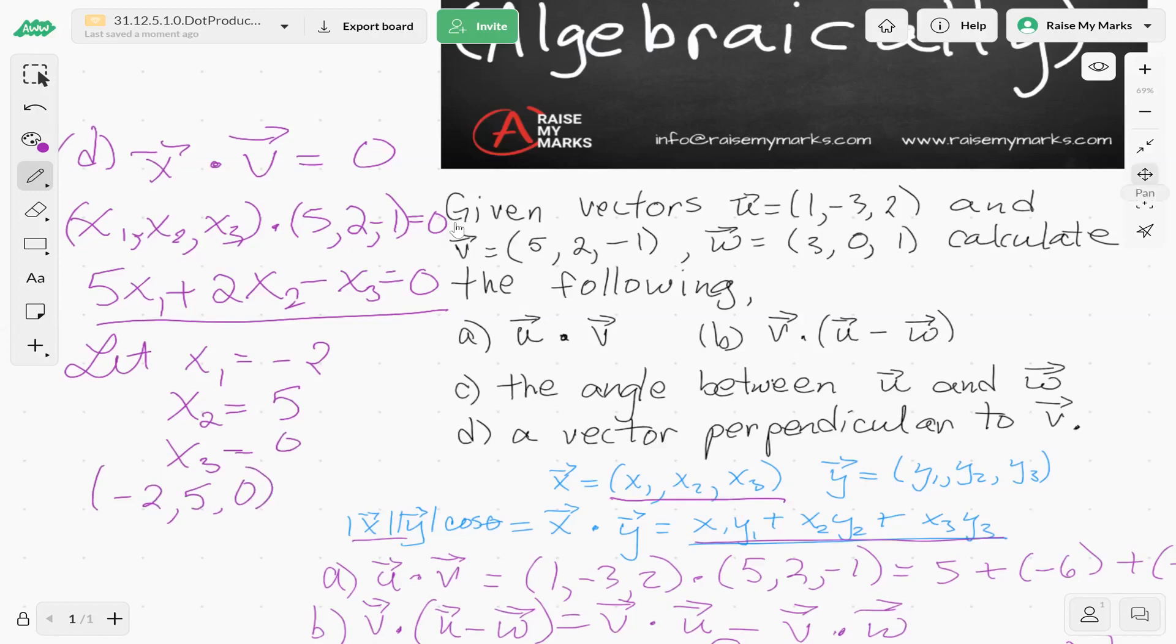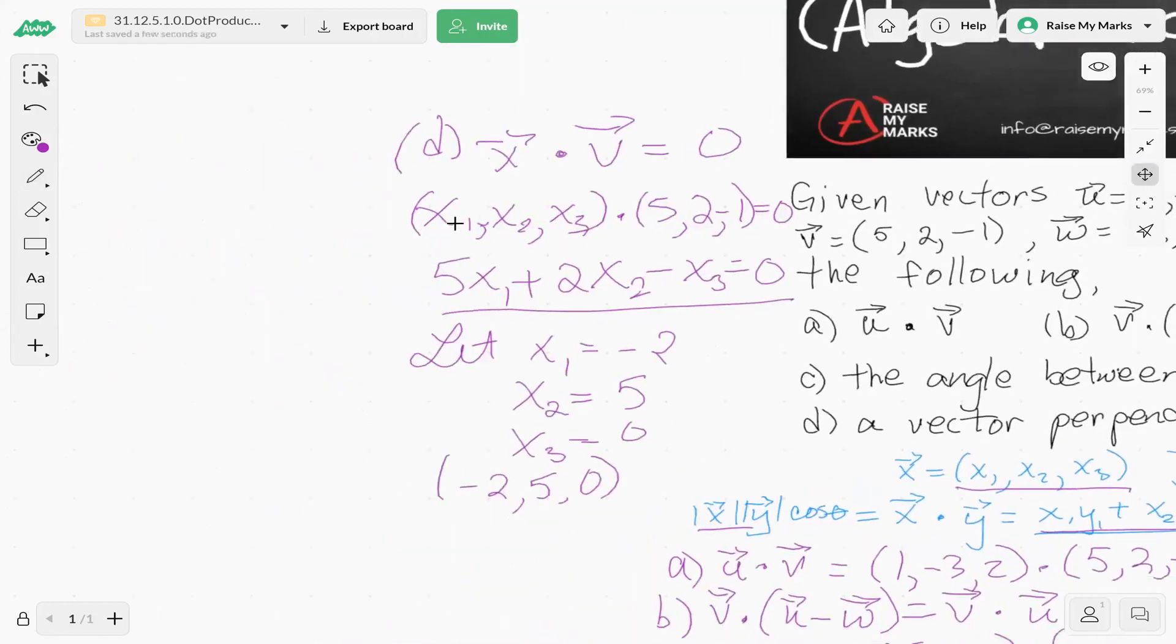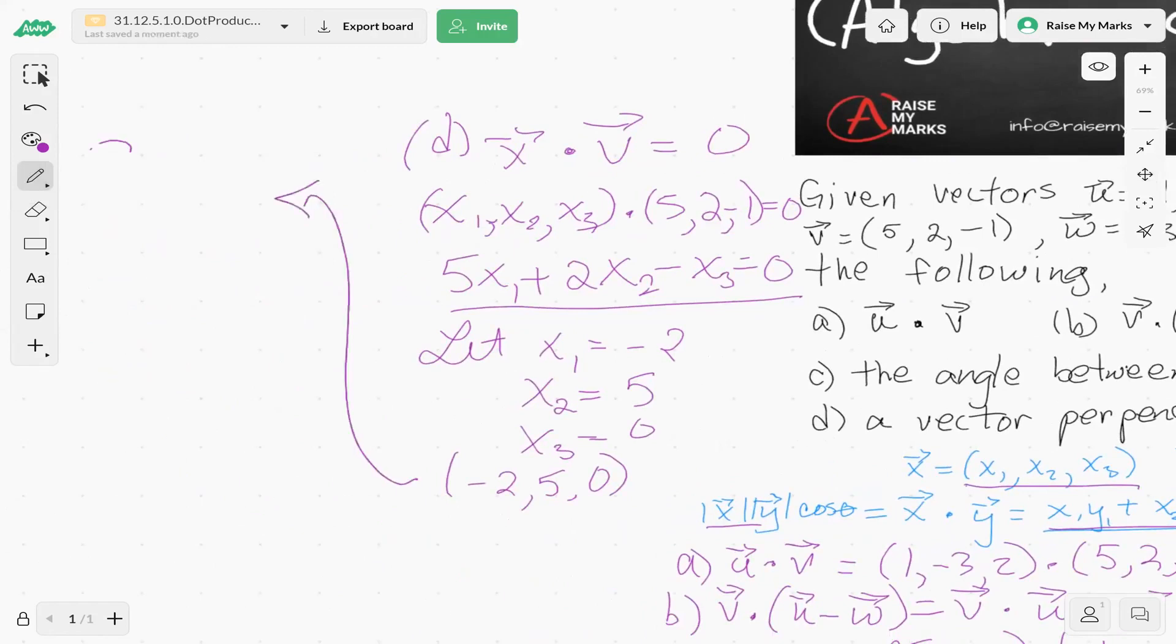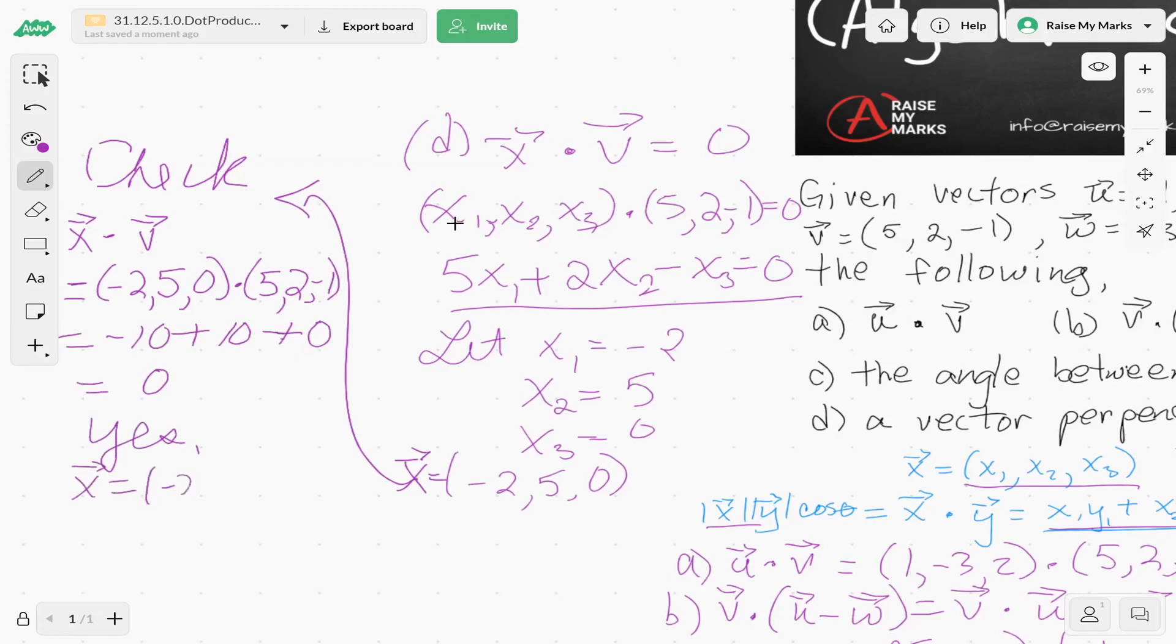Do you think that works? Let's try. All right, so let's scroll to the left a little bit, and we're going to check. So let's say that's our vector x. So let's check x dot product with v, and what do we get? So x is (-2,5,0), v is (5,2,-1). Take that dot product, and we get negative 10 plus 10 plus 0. This equals 0, so yes. Vector x equaling (-2,5,0) is perpendicular to v. Good.